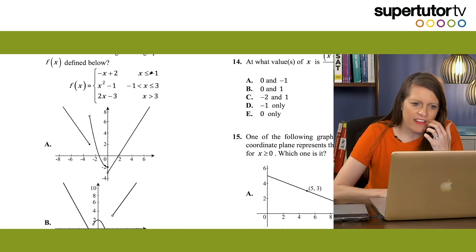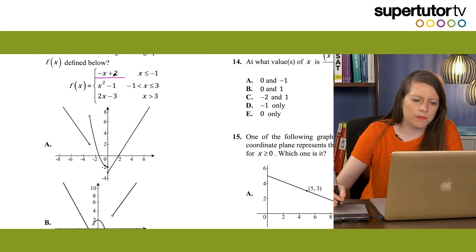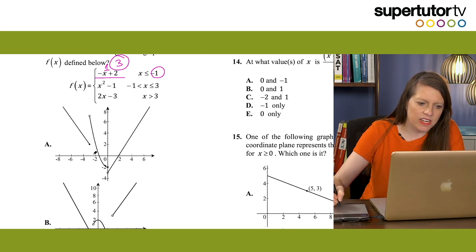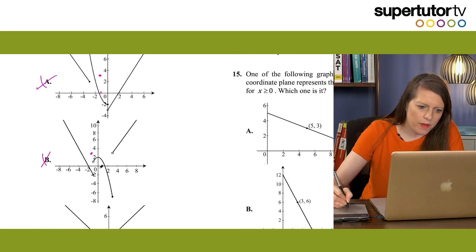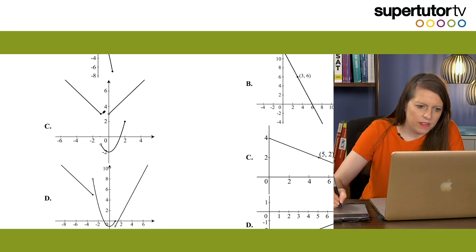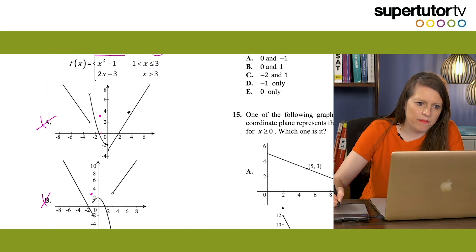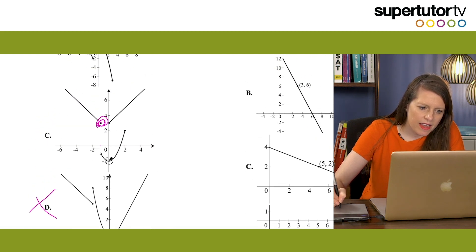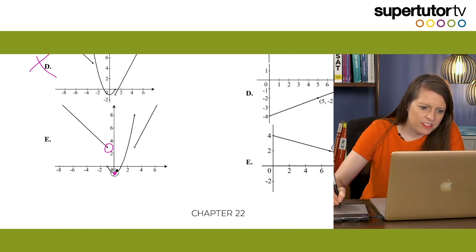For x less than or equal to negative 1, we use the piece negative x plus 2. Plugging in x equals negative 1 gives us negative (−1) plus 2 equals 3, so y equals 3 when x equals negative 1. I go to x = −1 on the graph and check if y is at 3. Looking at the answer choices, options E and C both show that point at (−1, 3), so A is eliminated.